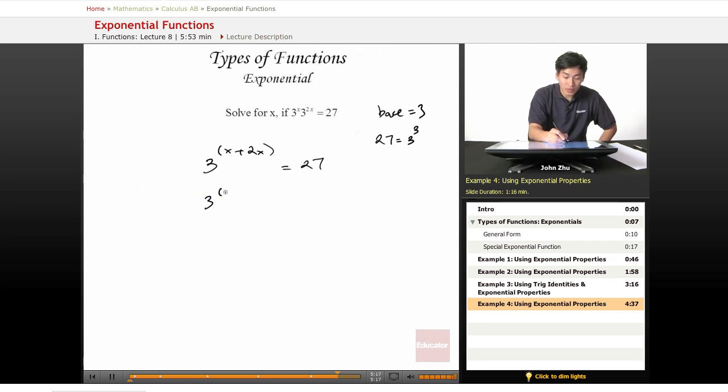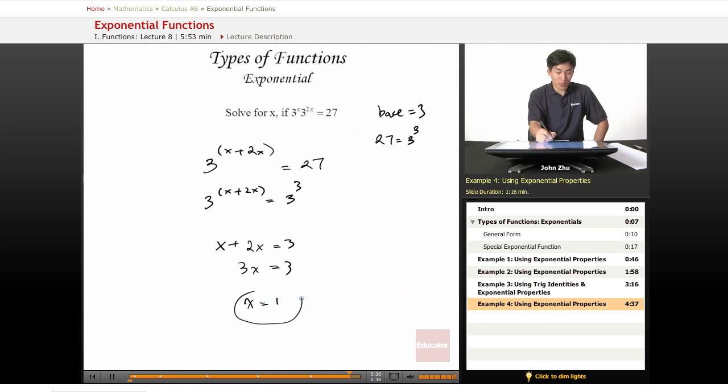So we can rewrite this as 3 to the x plus 2x equals 3 to the third, or 3 cubed. And we can rewrite this as x plus 2x equals 3, which means 3x equals 3, and solving for x we get that x equals 1.